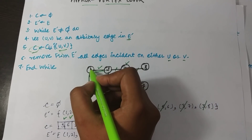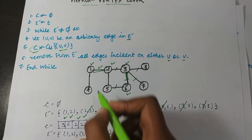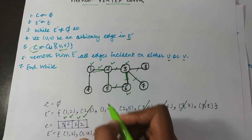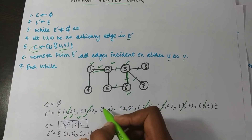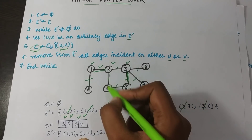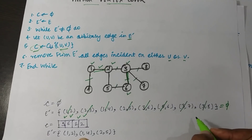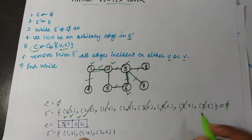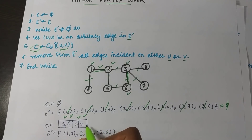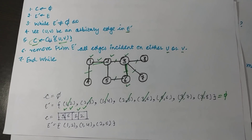From the remaining graph I arbitrarily choose edge (1, 2). Vertices 1 and 2 are added to the solution set. All edges associated with vertices 1 and 2 are removed: edges (1,2), (1,4), and (2,5) are removed. The edge set E is now empty, so the algorithm terminates. The final solution set contains four vertices: 1, 2, 3, and 6. This is how both approaches solve the vertex cover problem.